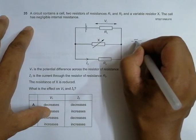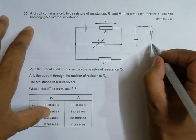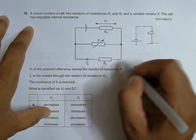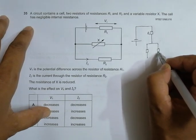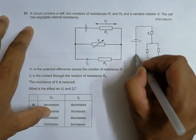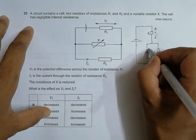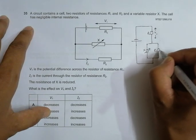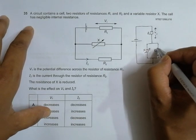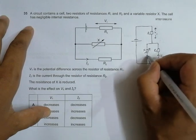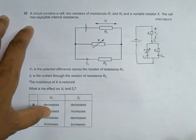So the circuit will look like this. This is the cell. It comes like this. This is R1. Then it goes to two branches. In one branch there is X, in another branch there is R2. And then somewhat like this. So this is V1, this is X, this is R2, and this current is I2. This is Ix and this is hole I. So this is the circuit diagram.